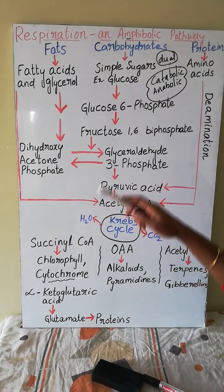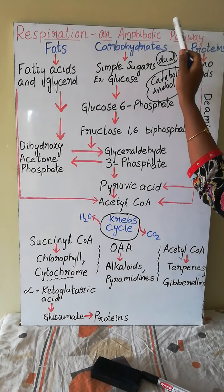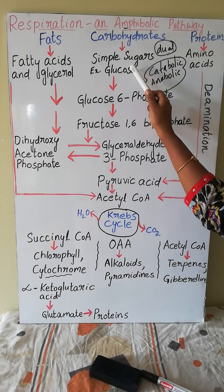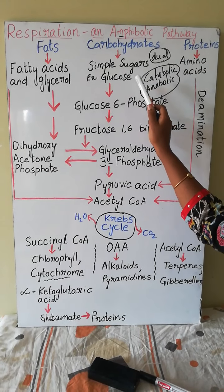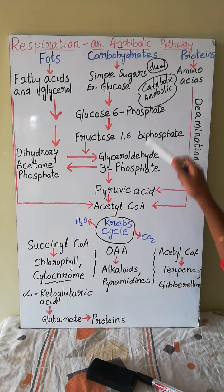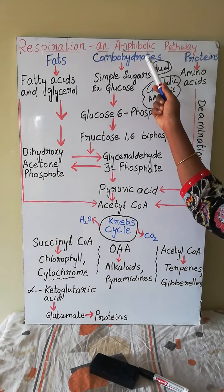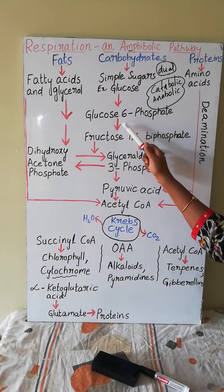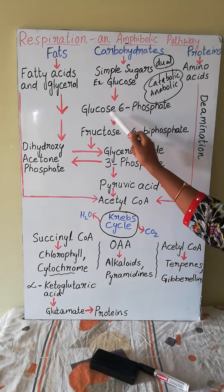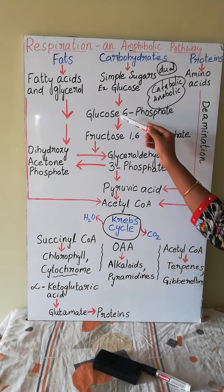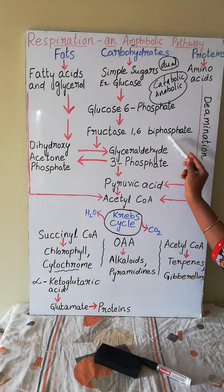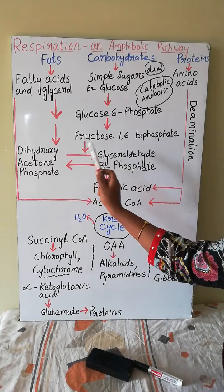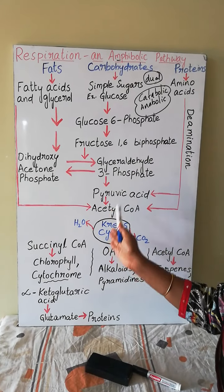In previous classes we discussed that carbohydrates get converted into simple sugars — that is glucose — which is the main respiratory substrate undergoing oxidation. Starch gets converted into sucrose, sucrose further hydrolyzes to glucose, which undergoes oxidation to form glucose-6-phosphate through the glycolytic pathway. Glucose-6-phosphate in turn forms fructose-1,6-bisphosphate, which further forms glyceraldehyde-3-phosphate and dihydroxyacetone phosphate when fructose-1,6-bisphosphate undergoes cleavage.